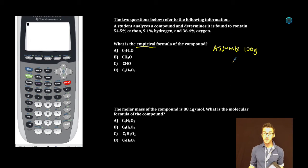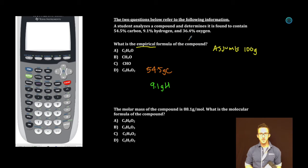We can assume any mass we want, but especially because we aren't using our calculator here, 100 is a pretty good number to work with. What is 54.5% of 100? You guessed it, 54.5 grams carbon. 9.1% of 100 grams gives 9.1 grams hydrogen. 36.4% of 100 grams gives 36.4 grams oxygen.